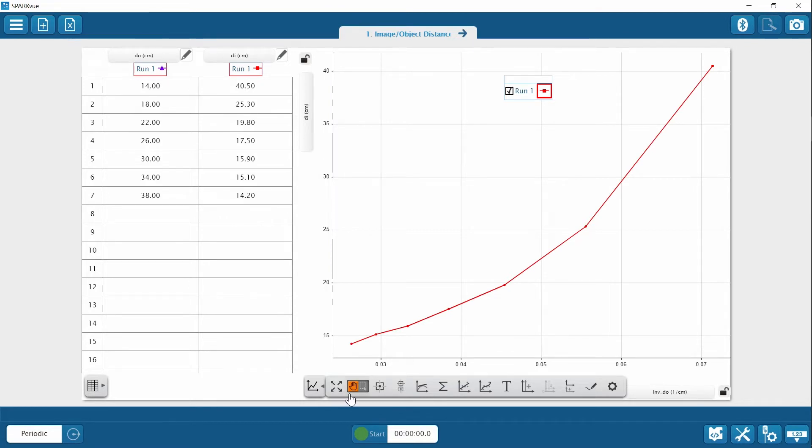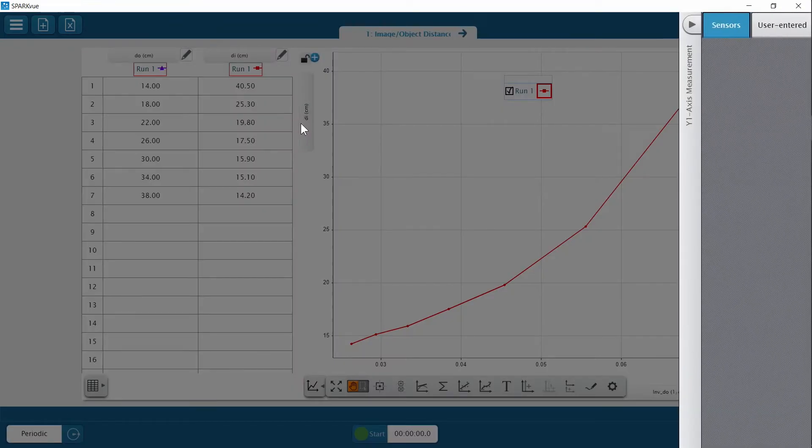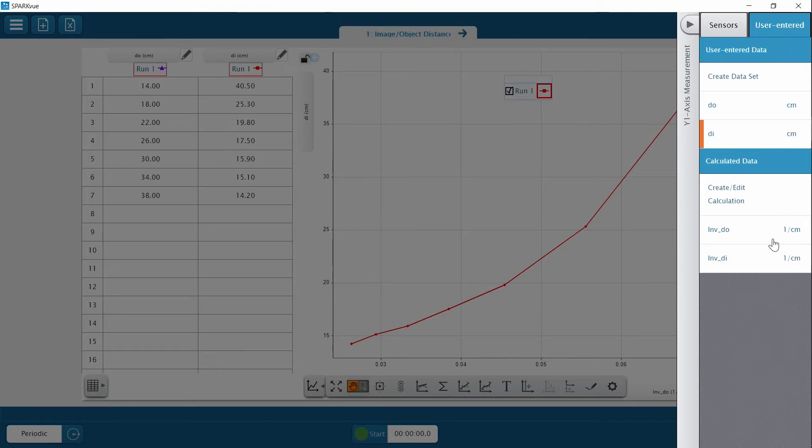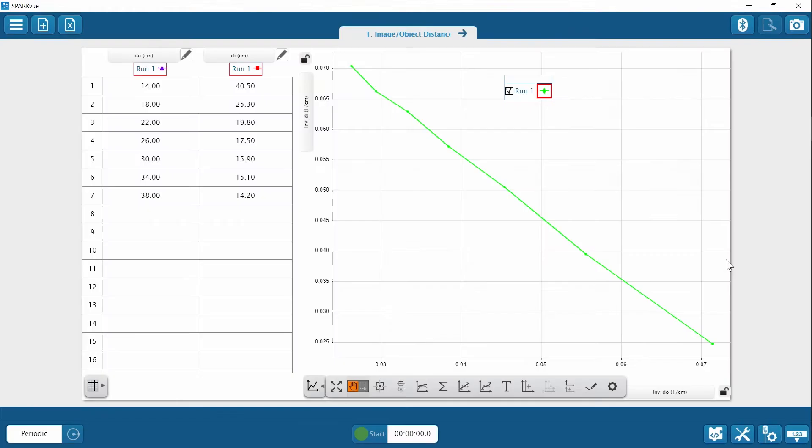After rescaling, it got straighter. Maybe I need to try the inverse of the image distance as well. There we go - a nice straight line. Just a click gives me a linear fit with the slope and the y-intercept.